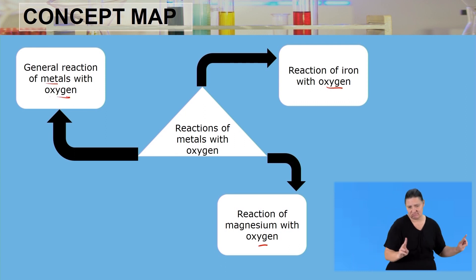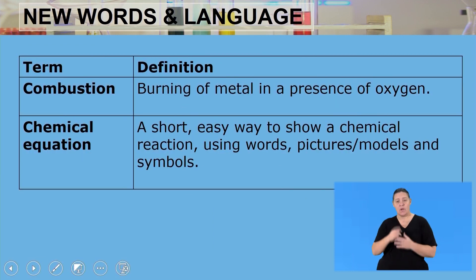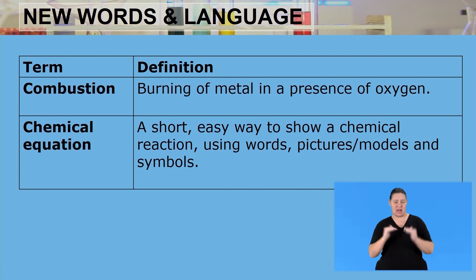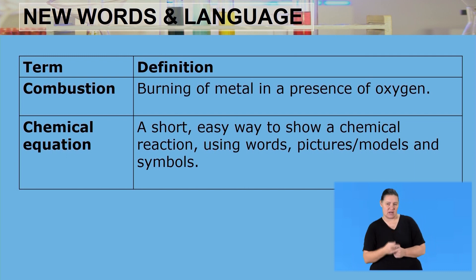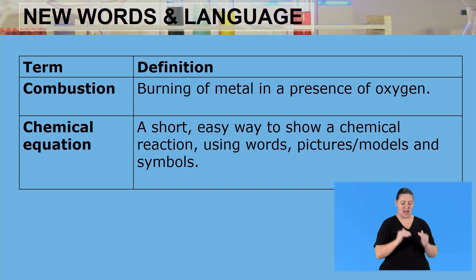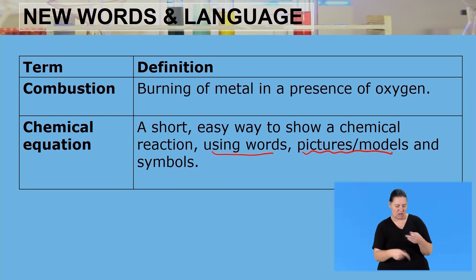In this lesson we used words such as combustion and chemical equation. By definition, combustion is the burning of a metal in the presence of oxygen, whereas a chemical equation is a short, easy way to show a chemical reaction using words, pictures, or models.